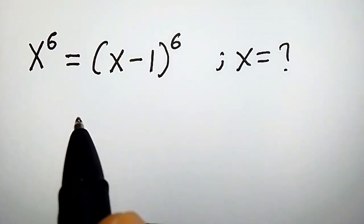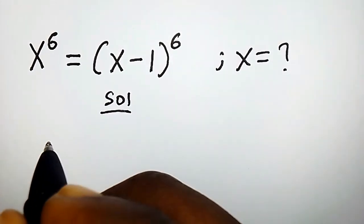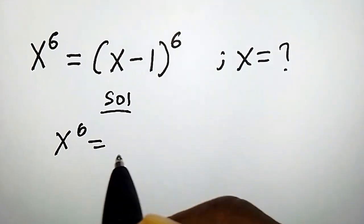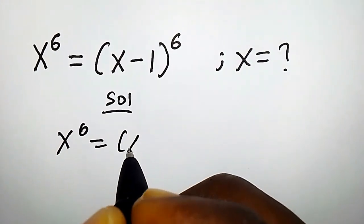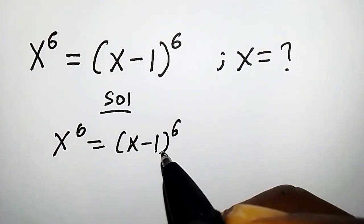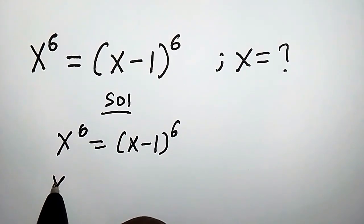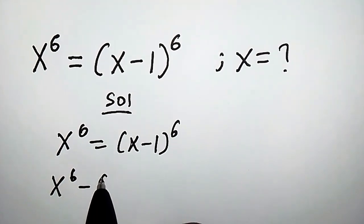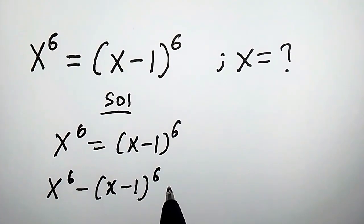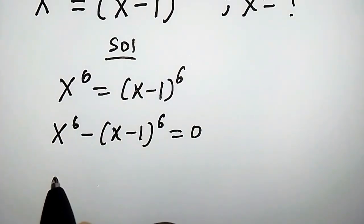Hello, how do we solve this polynomial equation? We have x to the power of 6 equals x minus 1 to the power of 6. Let's bring this to the left side, so we're going to have x raised to the 6th minus x minus 1 to the power of 6 equals to 0.